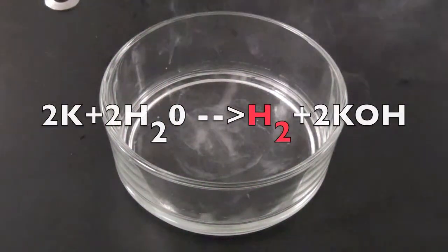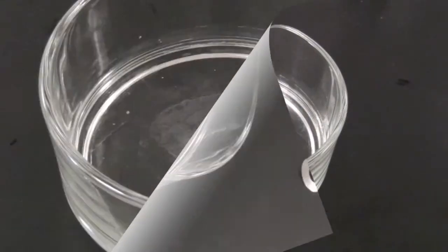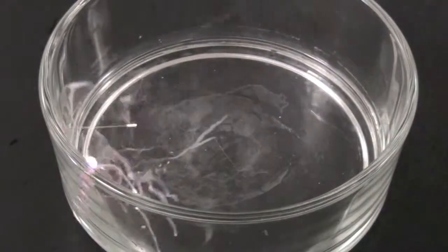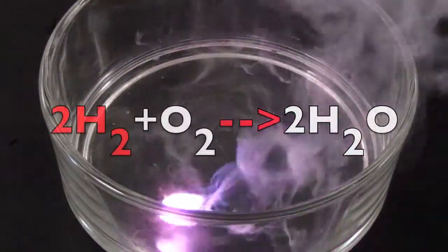As hydrogen gets released, it pushes the potassium around on the surface of the water. Left to linger is the flammable hydrogen gas, which in the presence of heat ignites, regardless of the underlying water.